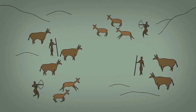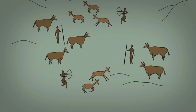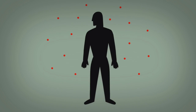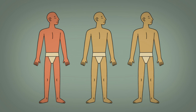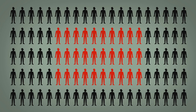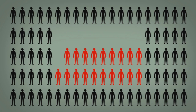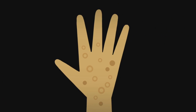10,000 years ago, a deadly virus arose in northeastern Africa. The virus spread through the air, attacking the skin cells, bone marrow, spleen, and lymph nodes of its victims. The unlucky infected developed fevers, vomiting, and rashes. 30% of infected people died during the second week of infection. Survivors bore scars and scabs for the rest of their lives.